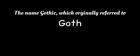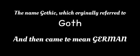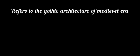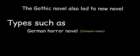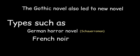The name Gothic, which originally referred to the Goths and then came to mean Germanic, refers to the Gothic architecture of the medieval era of European history, in which many of these stories take place. This extreme form of romanticism was very popular throughout Europe, especially among English and German language writers and artists. The Gothic novel also led to new novel types such as the German horror novel and the French novel.